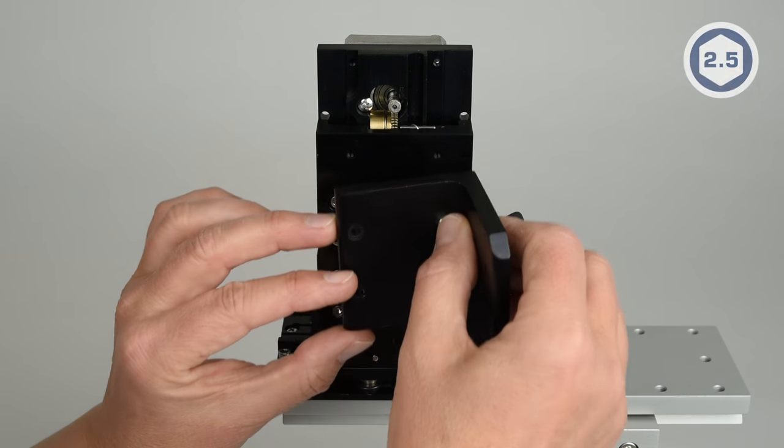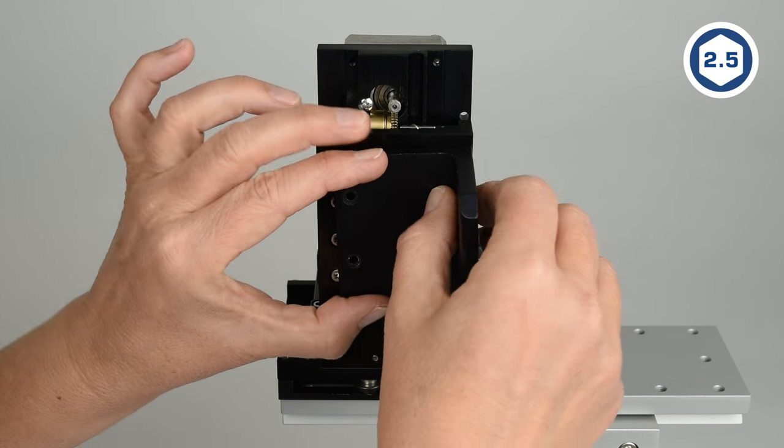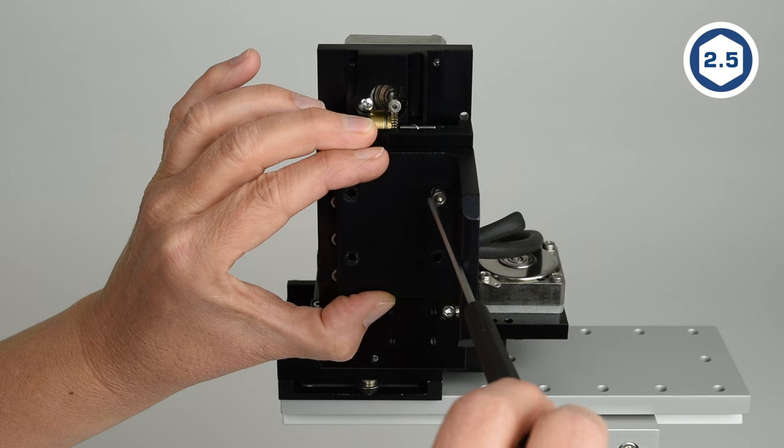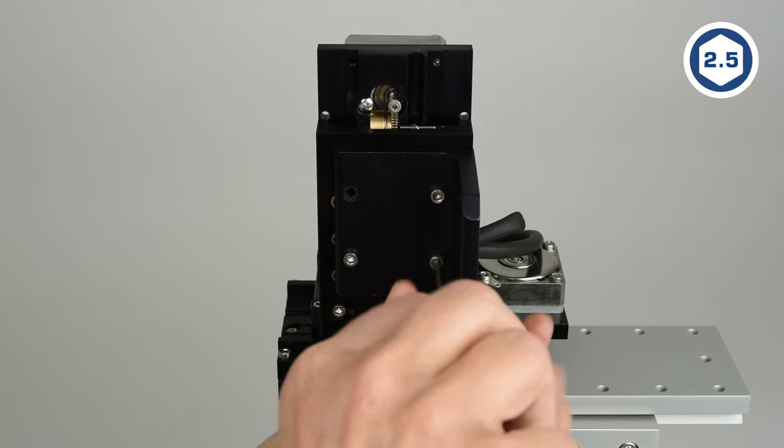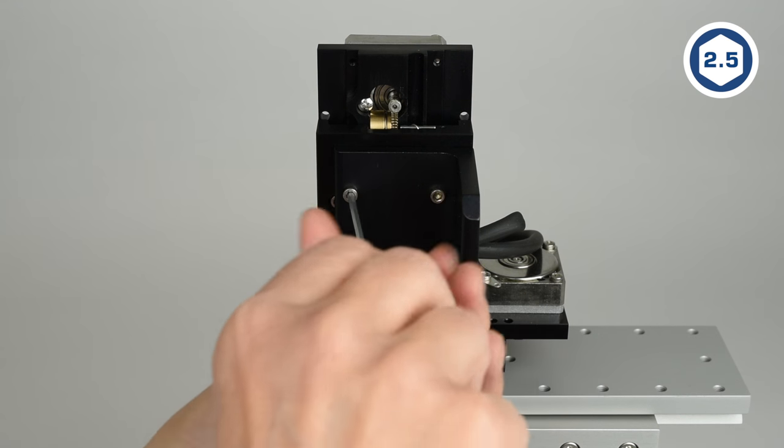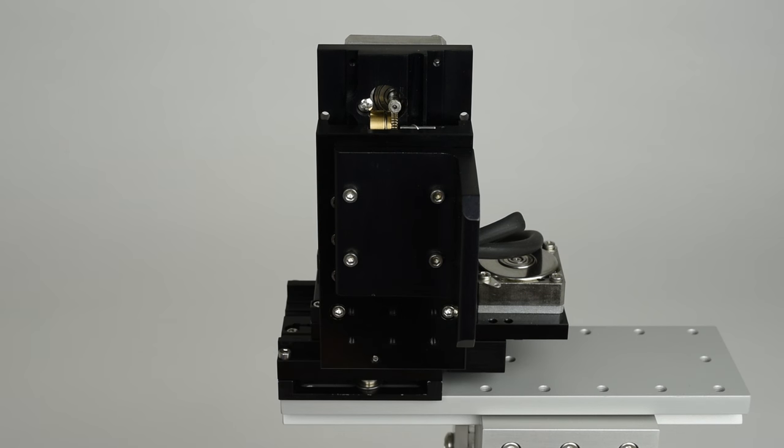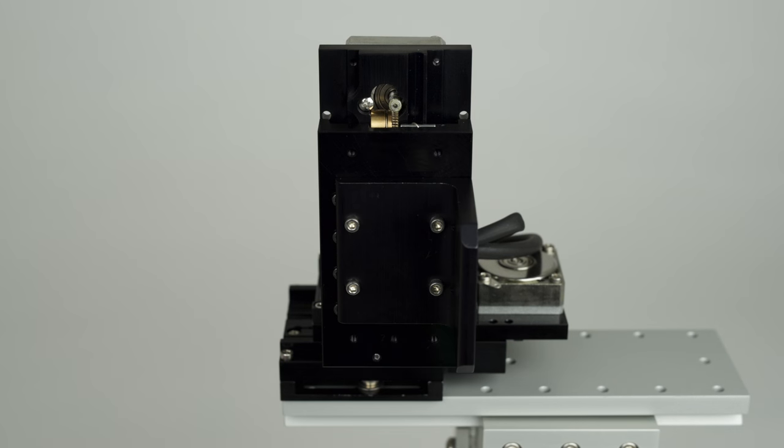Use an M2.5 Allen wrench to attach the right angle adapter to the manipulator in the same place as the swing gate with the provided M3 by 10 socket cap screws. Note that if you need a steeper or shallower angle, the adapter can be mounted lower or higher on the Z axis slide.